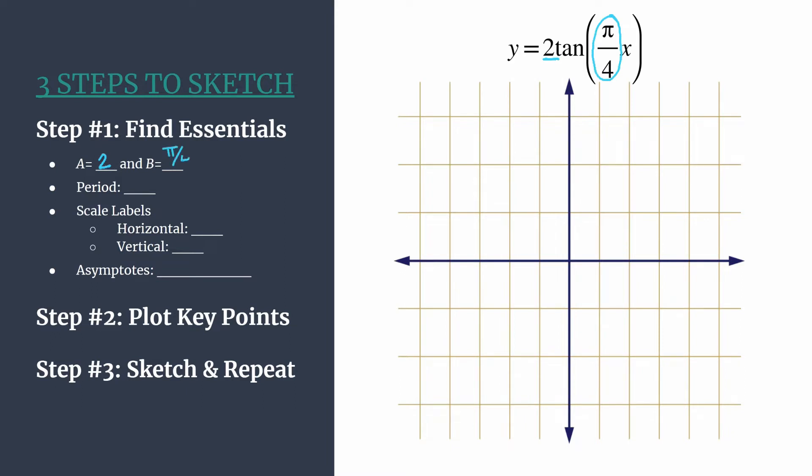So don't worry about that. If you actually wanted to estimate out pi over four, that's like 3.14 divided by four, and so you could find a decimal if you wanted, but there's no need. That's just a constant out in front of the x. Now let's find the period. Remember for our tangent graphs, that's pi divided by B.